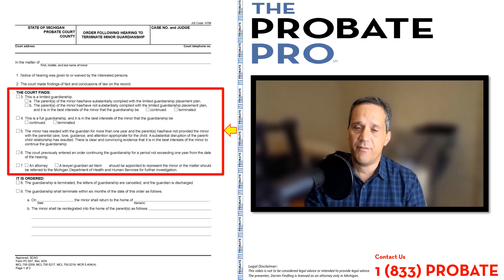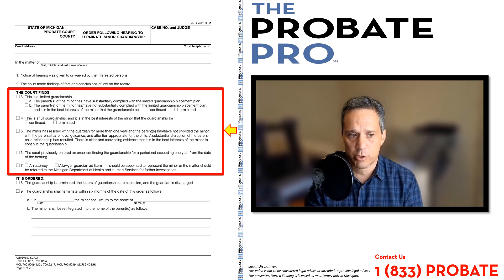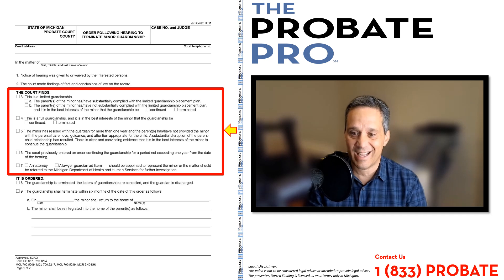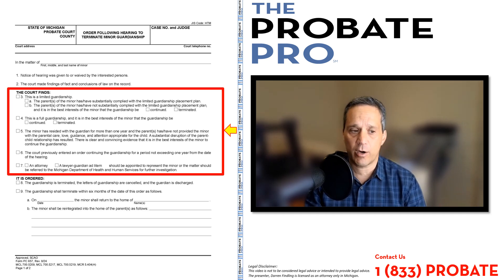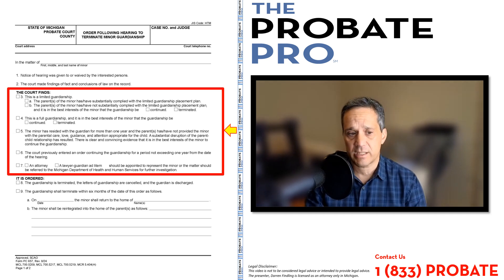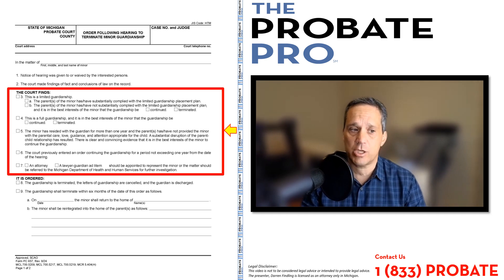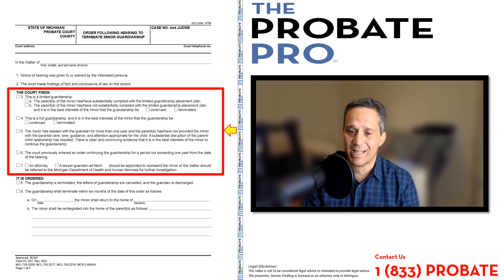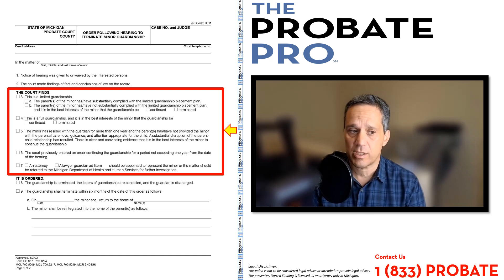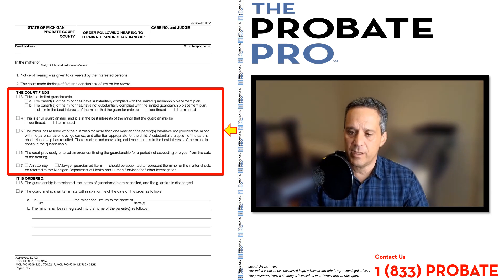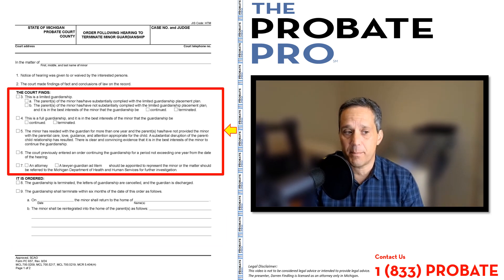In the event that the court wants to appoint either an attorney or a lawyer guardian ad litem — or GAL, another way we refer to guardian ad litem — to represent the minor, and whether it should be referred to the Michigan Department of Health and Human Services, that would be used if the court wants further investigation of this particular petition. That top section relates to the findings of the court — the rulings, findings of fact, and conclusions of law that have been made.